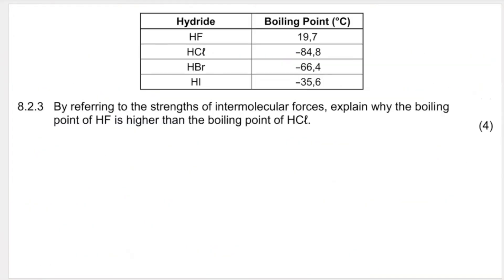For 8.2.3, they want us to refer to the strengths of intermolecular forces to explain why the boiling point of HF, hydrogen fluoride, is higher than the boiling point of HCl. So we're directly comparing these two. And we can definitely see HF has a higher boiling point. Now they say by referring to strengths of intermolecular forces, so they're already excluding the argument pertaining to molecular mass. They're basically hinting in the question that the intermolecular forces will differ in strength.